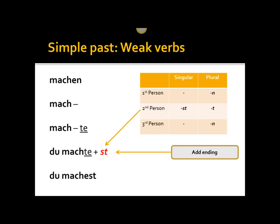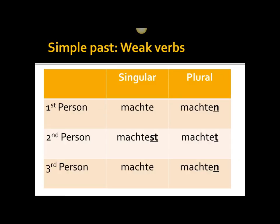Once we've completed those three steps and have mach-te, we simply add an ending according to the declension. So: ich machte, du machtest, er/sie/es machte, wir machten, ihr machtet, sie machten. In the singular, we only have an ending in the second person singular. The stem ends in an h, so we simply add the simple past marker -te, and then add the endings as required.